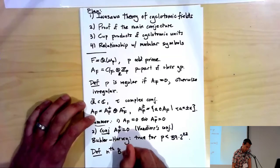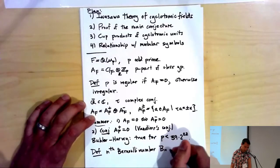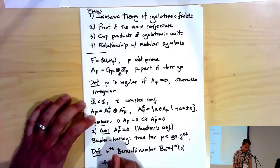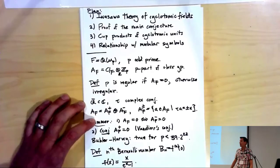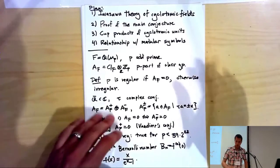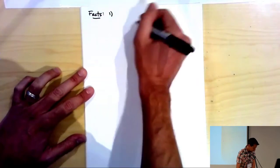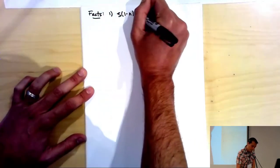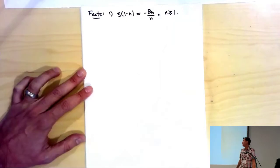How do we tell if a number is irregular? We look at Bernoulli numbers B_n, defined as the nth derivative at zero of x/(e^x − 1). A key fact: the Bernoulli numbers vanish for odd n greater than 1, so the even ones are the interesting ones. They appeared in the last talk in the sense that ζ(1 − n) = −B_n/n for n ≥ 1.